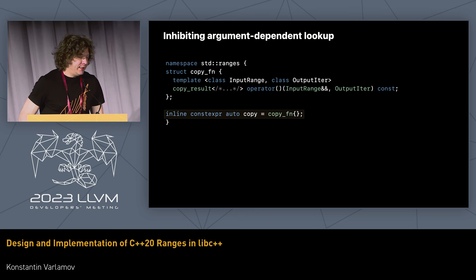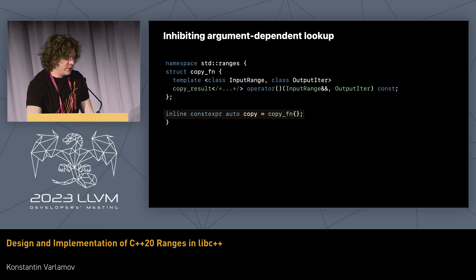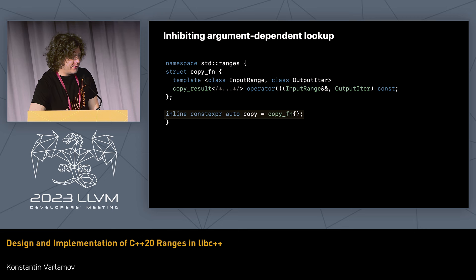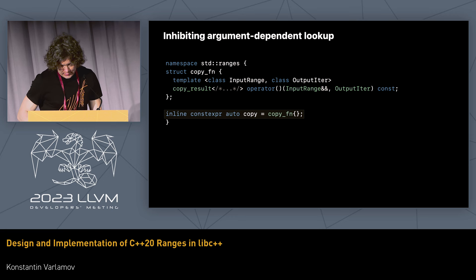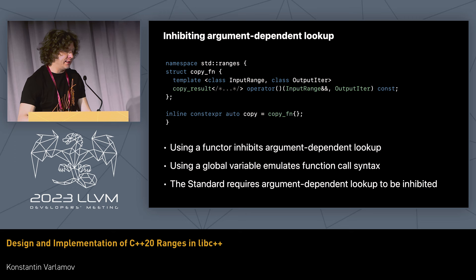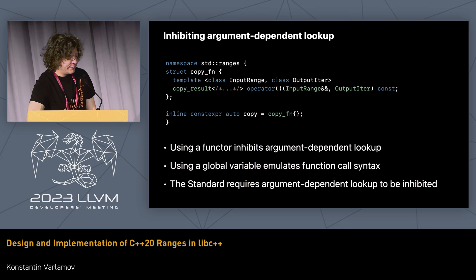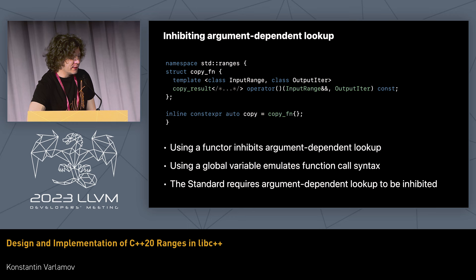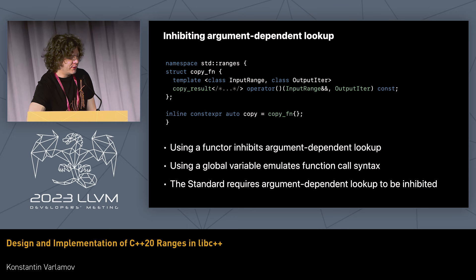As a final step, we create a global variable — an inline constexpr instance of that functor type. Because it's inline and constexpr, there's no runtime overhead, and having a global variable provides extra syntax sugar so we don't have to instantiate the functor every time. The standard doesn't actually prescribe this particular technique; it just says ADL should be inhibited somehow. In theory we could use special attributes on a free function instead, and I think there were some proposals along those lines.